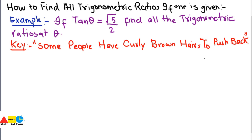In this example we have been given tan theta, but it may be cos theta or sin theta — you have to use the same procedure to find all the trigonometric ratios. The key to find all the trigonometric ratios is the phrase: 'some people have curly brown hairs to push back.' This is basically just a line to help you remember the trigonometric ratios.